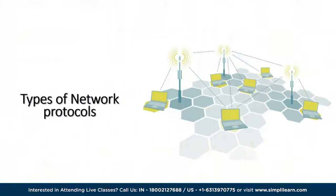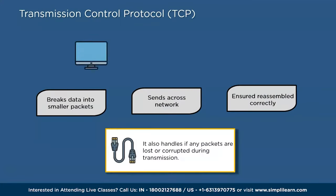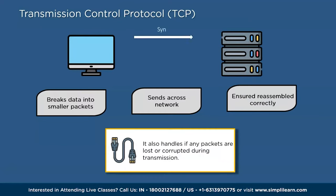The first type of network protocol is TCP, or Transmission Control Protocol. TCP is a network protocol that ensures reliable and ordered delivery of data between devices. It breaks down data into smaller packets, sends them across the network, and ensures that they are reassembled correctly at the receiving end. TCP also handles error detection and re-transmission if any packets are lost or corrupted during transmission.